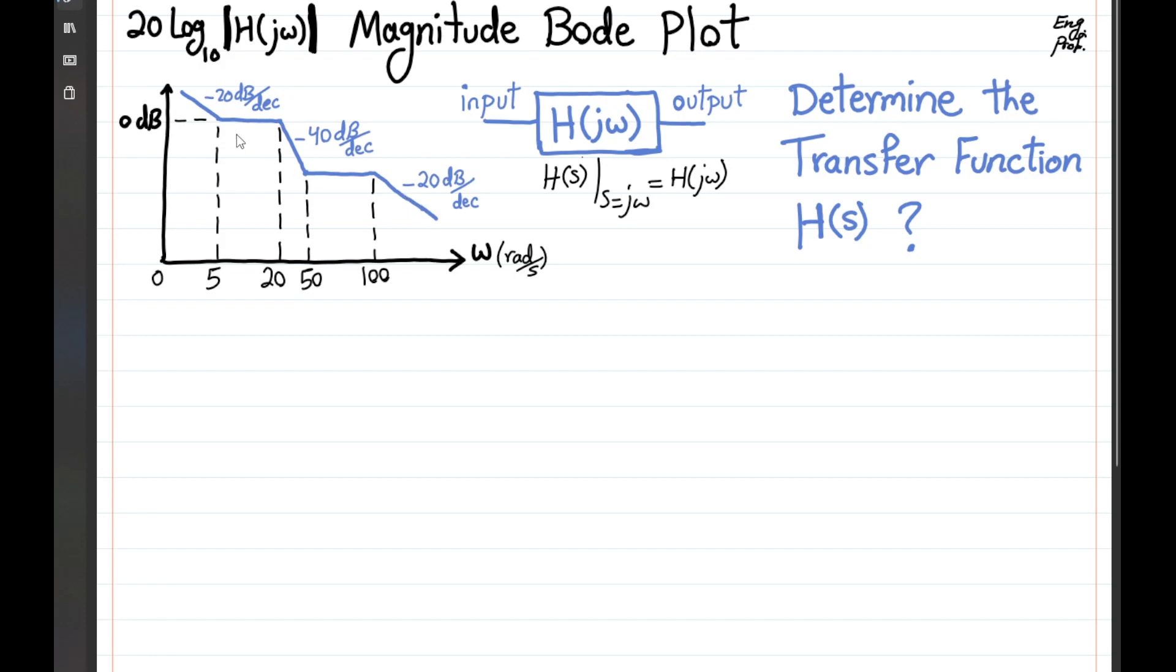We have this behavior: 20 dB drop constant, 40 dB drop constant, and then 20 dB drop. So with this scheme, we want to find the transfer function.